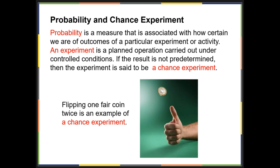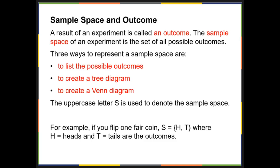If the result is not predetermined, the experiment is said to be a chance experiment. Flipping a fair coin is an example of a chance experiment. Also, rolling a six-sided fair die would be a chance experiment.